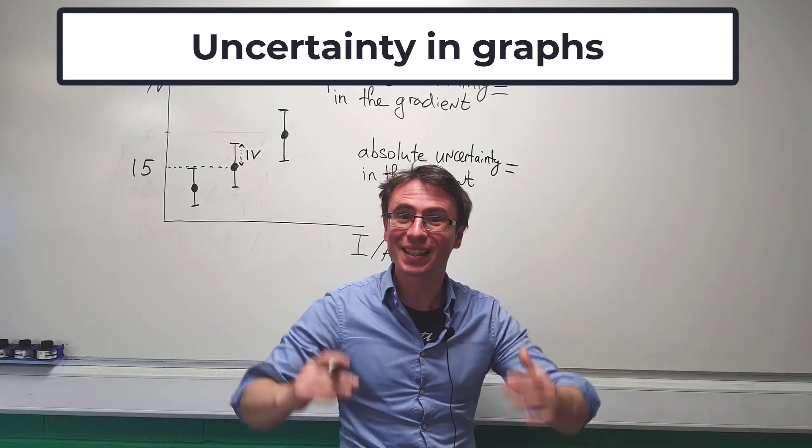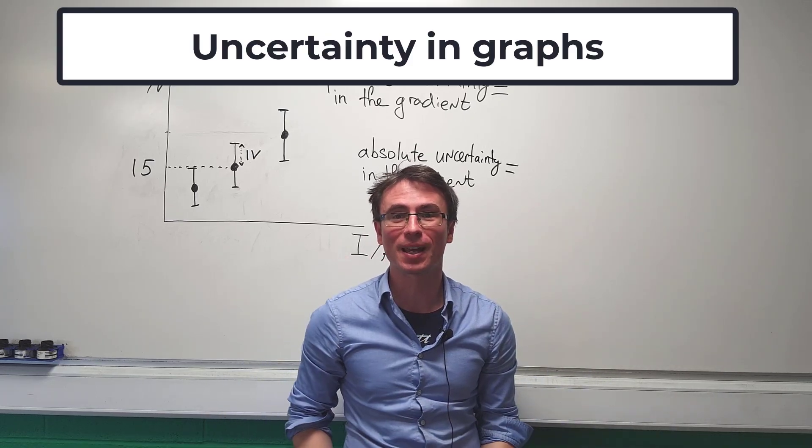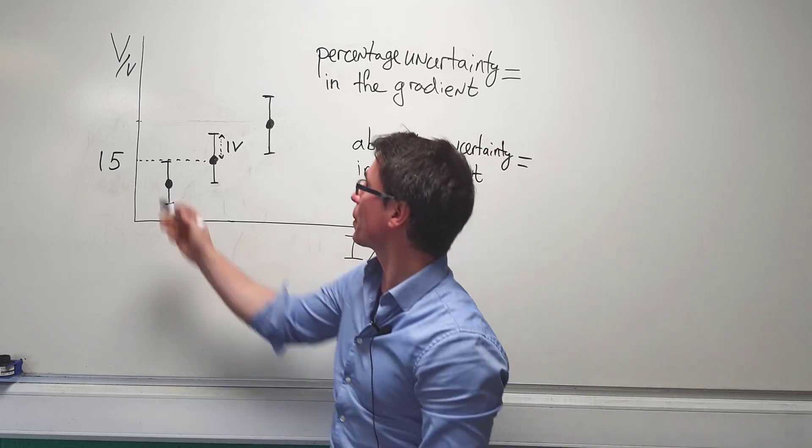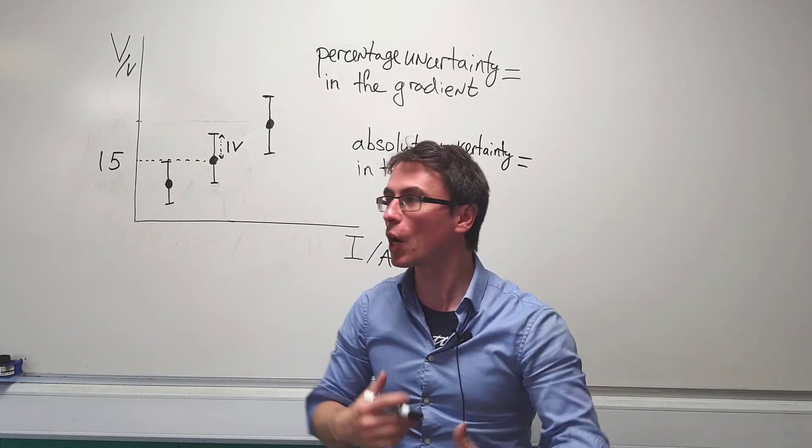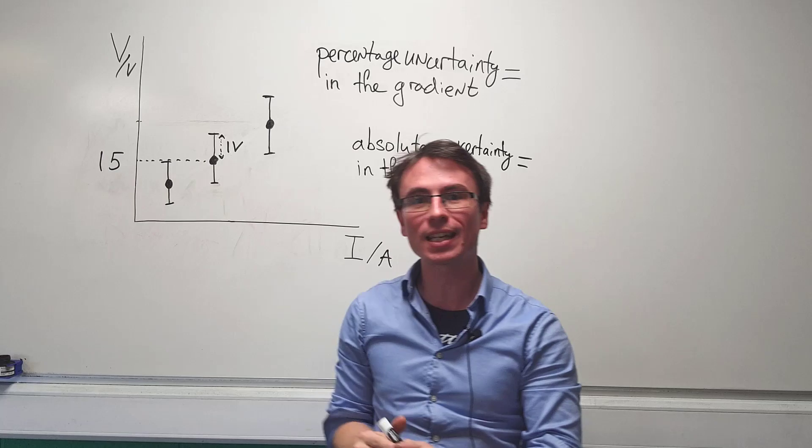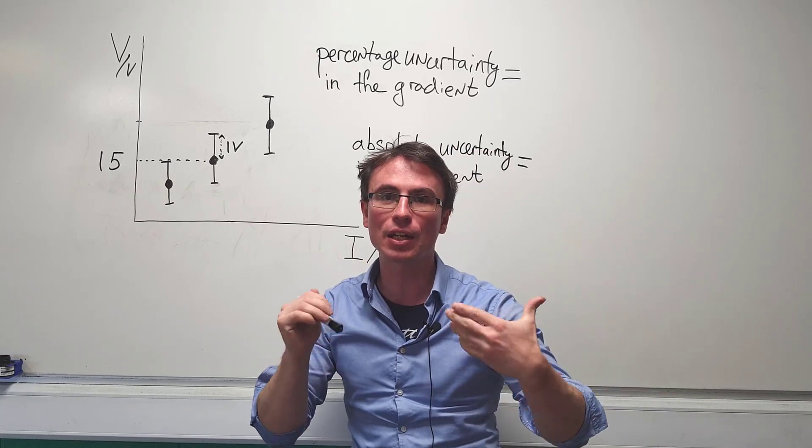We can calculate uncertainties from graphs and this very often comes up in physics exams. For instance, I've made up some data. We have some voltage against current and we know that this point here corresponds to 15 volts.